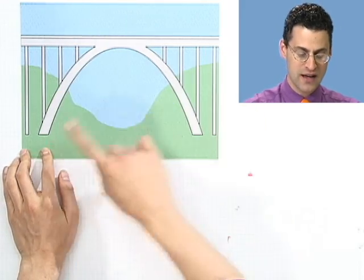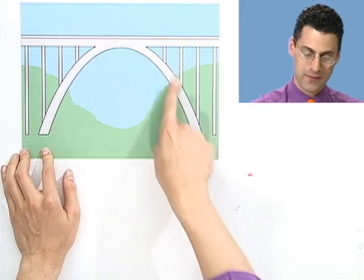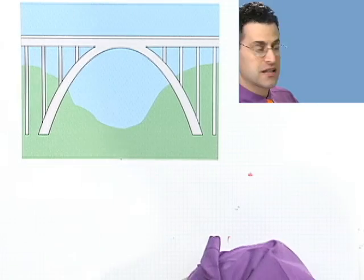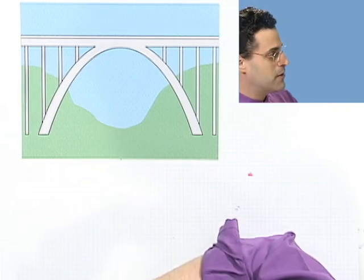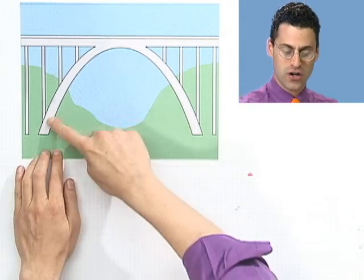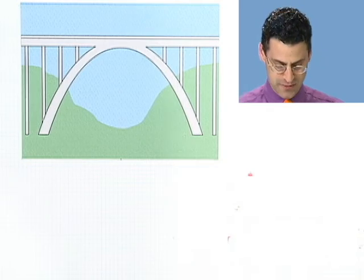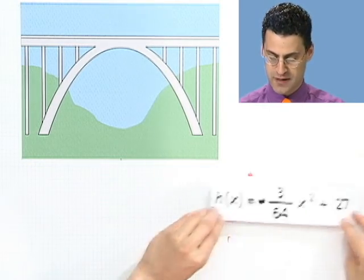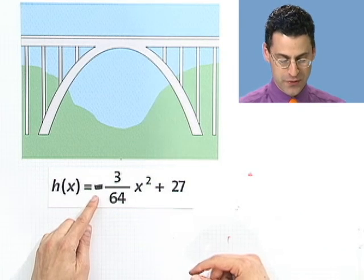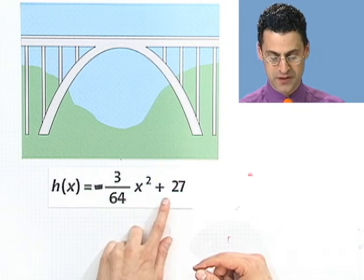You can see, here's the bridge going over there, and then this curve here is essentially a parabola. And so now suppose we're given the following information, so let's take a look at this together. So suppose that you're told that the height of this arch of the bridge is given by the function h of x equals minus 3 over 64 x squared plus 27.